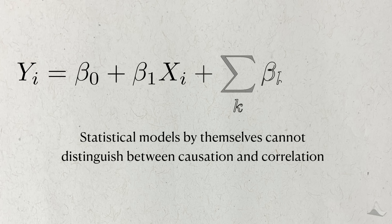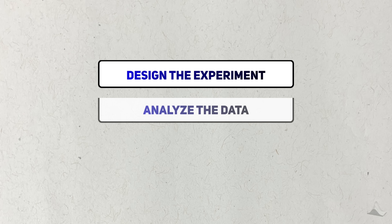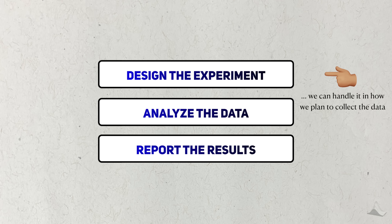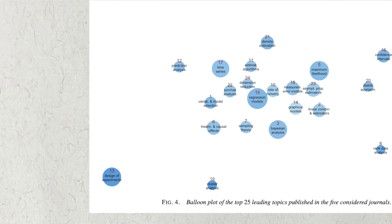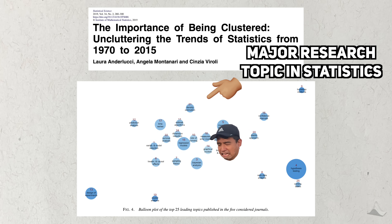Statistical models by themselves can't distinguish between causation and correlation. So instead of trying to approach the problem in the analysis phase, we can actually set ourselves up for success by planning how we gathered the data in the first place. In the arena of biostatistics, this is known as clinical trial design. But more generally, it's simply called the design of experiments — it's so important that it's its own research topic in statistics, and it's what I personally research and teach.